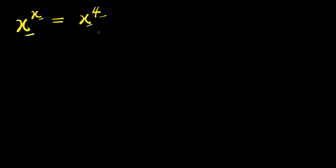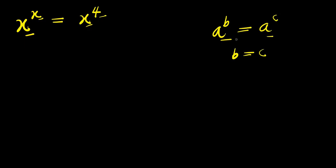Now, consider this identity: if you have a to the power of b equals a to the power of c, since the bases are the same, you can equate b equals c — you compare the exponents. So by doing that here, we can say that x equals 4. But this is just one of the solutions because we have other solutions.